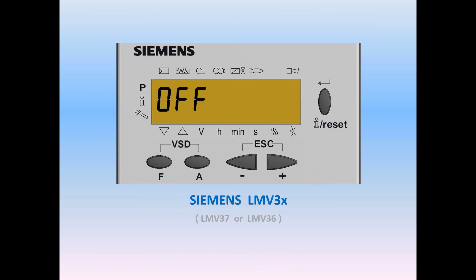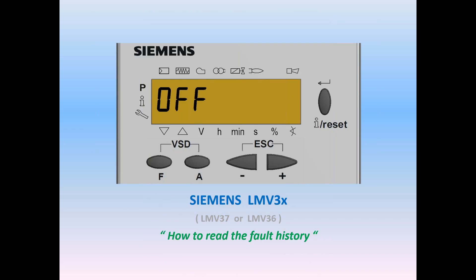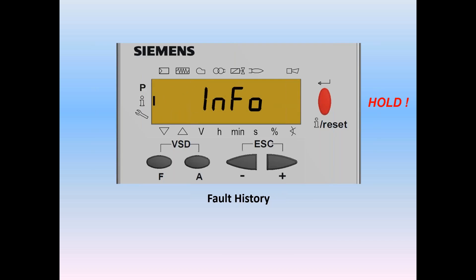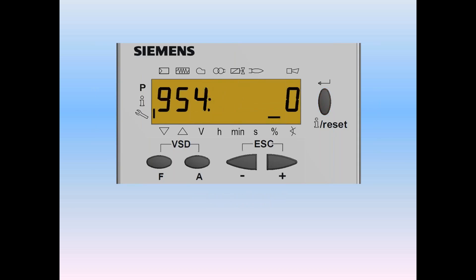Let's take a look at how to read fault codes on the Siemens LMV3, specifically the 3637. No login is required. Start by holding the reset button — don't let it go. The screen will say 'info'; keep holding it, and then it will say 'service.' Once it says service, you can let go.